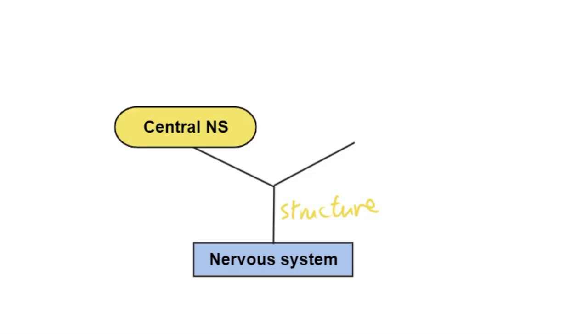If we consider the structures of the nervous system, there are two types. The first one to consider is the central nervous system. The actual organs in the central nervous system are the brain and the spinal cord, and both of these are coordinators in the whole system. They mainly contain the relay neuron or the interneuron.